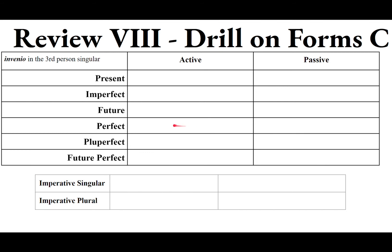The perfect stem is INVEN. Add the perfect ending ENIT to get INVENIT — notice the accent shifts because the E is long — meaning he/she/it found / has found. The pluperfect is INVENERAT: he/she/it had found. The future perfect is INVENERIT: he/she/it will have found. For the passive perfect, pluperfect, and future perfect: INVENTUS A UM EST, INVENTUS A UM ERAT, and INVENTUS A UM ERIT.